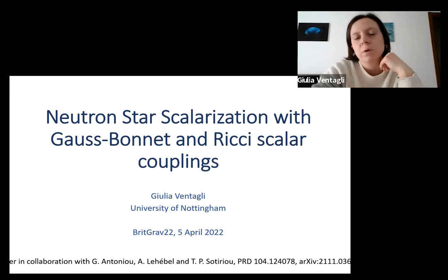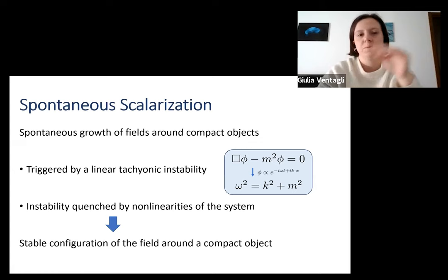I will talk about spontaneous scalarization in neutron stars for a theory that contains both the Gauss-Bonnet and the Ricci-scalar couplings. First of all, let me explain what spontaneous scalarization is.